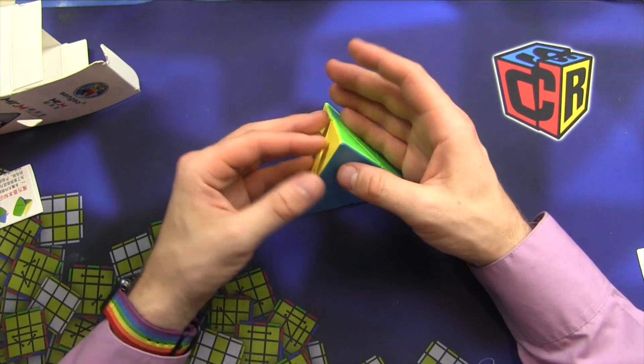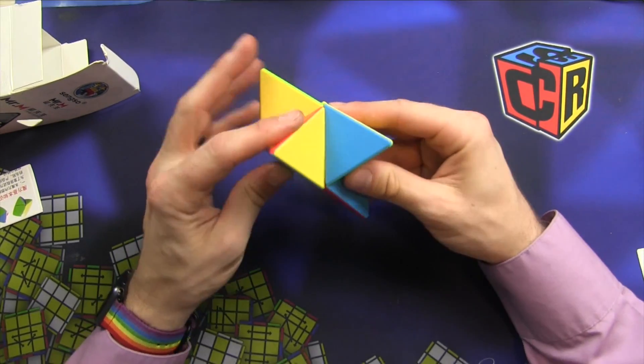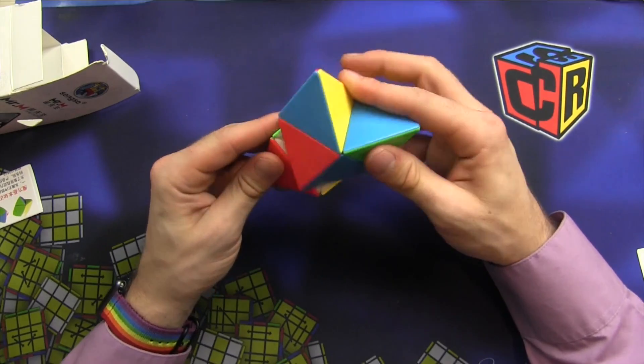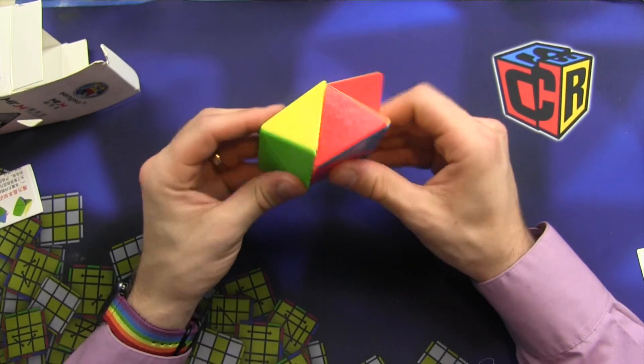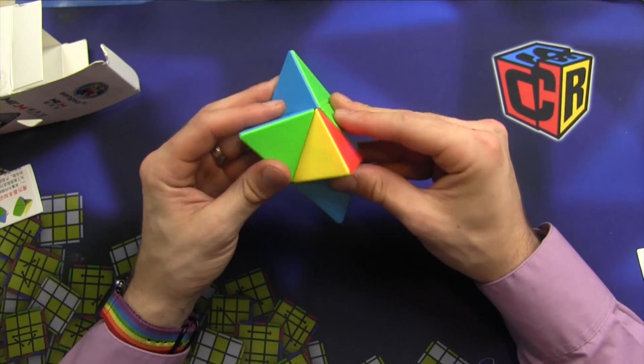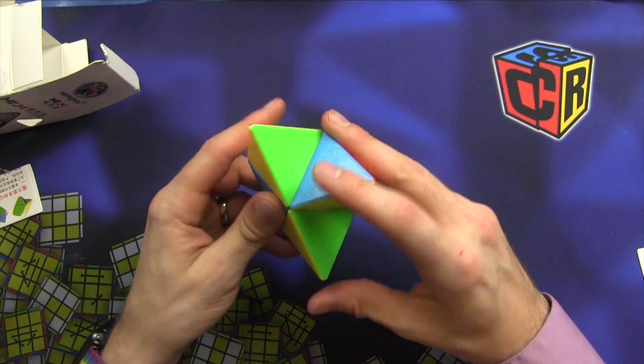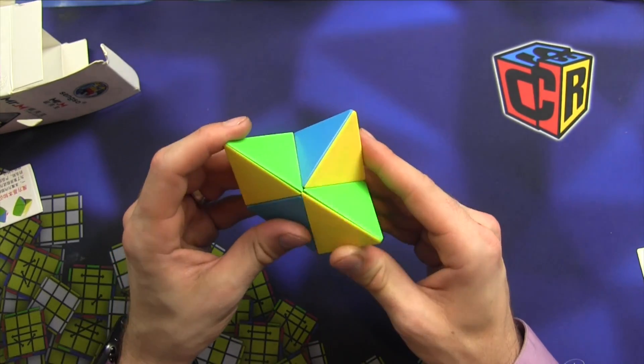Which can make it easier but also can make it more difficult because sometimes it looks like you have one corner twisted and it's very confusing how to solve. But this is really nice. If I want to solve a pyromorphix I'm going to this because of its clicky nature.